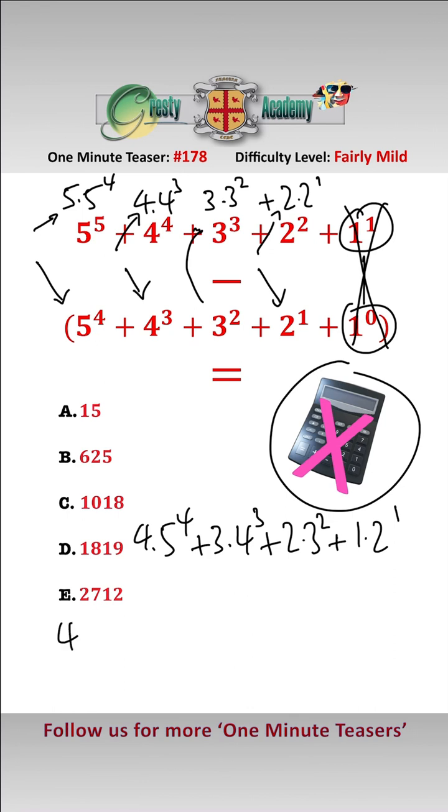Now 4 times 5^4, we can write 5^4 as 5^2 squared, so that's 4 times 25 times 25.